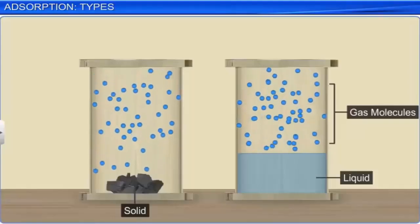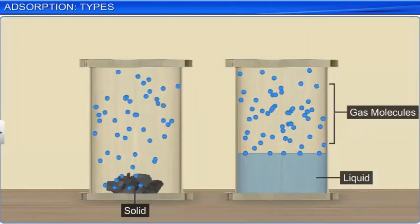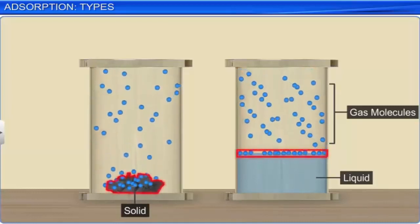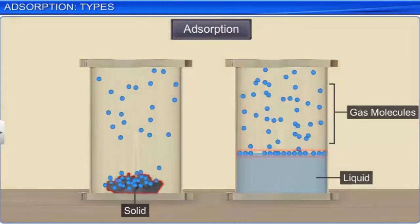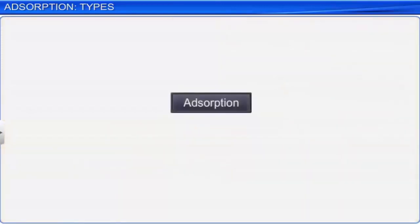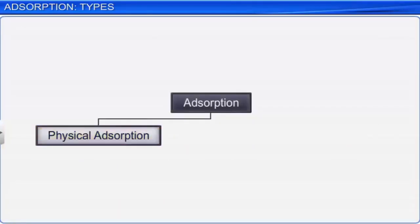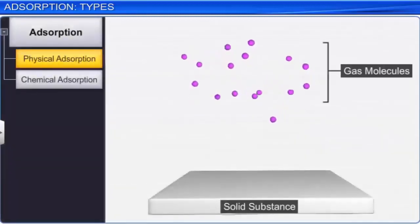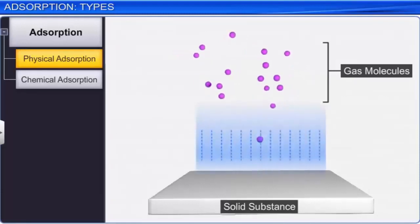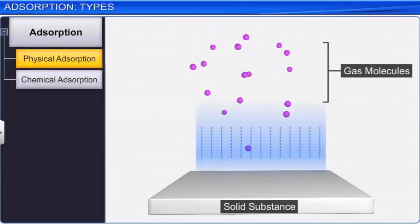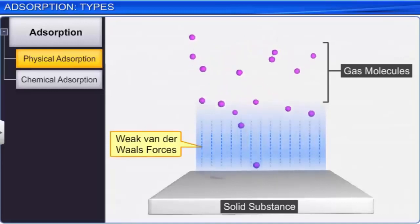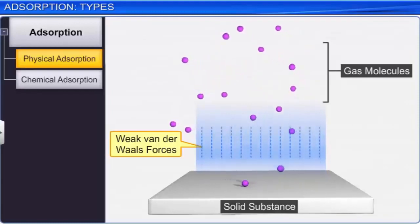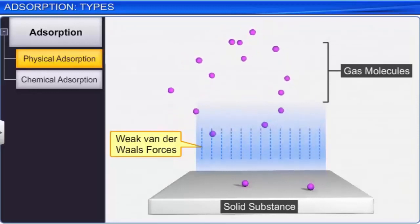The accumulation of molecular species on the surface of a solid or liquid, resulting in a higher concentration of the molecules on the surface, is known as adsorption. Adsorption of gases on solids can be of two types: physical adsorption and chemical adsorption. When gas molecules or atoms are held to the surface of a solid by weak Van der Waals forces, it is called physical adsorption, also known as physisorption or Van der Waals adsorption.